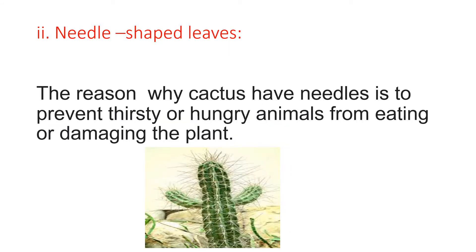Next is needle-shaped leaves. Why does the cactus have spikes or needle-shaped leaves? These spikes are used to protect the cactus from hungry animals, so that other animals will not eat them. That is the use of the needles — it is called needle-shaped leaves because the spikes look like needles. The reason why cactus have needles is to prevent hungry animals from eating or damaging the plant.